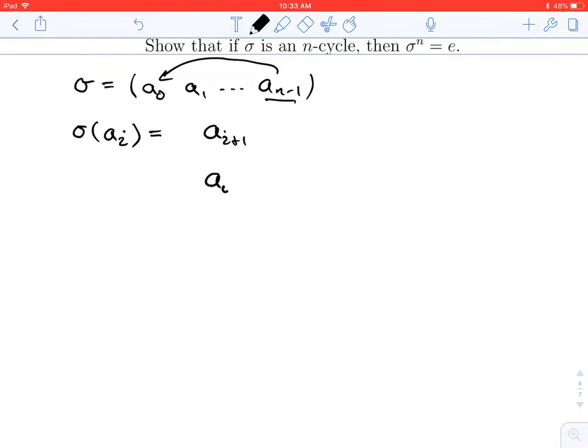So there's really two cases. If i was anything between zero and n minus 1, but not including n minus 1, then you get a_{i+1}. But in that special case where i is equal to n minus 1, then a sub i gets mapped to a_0.